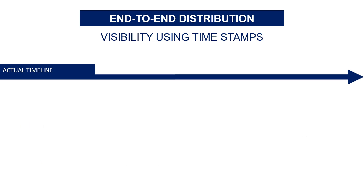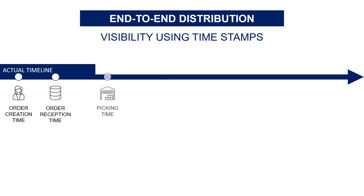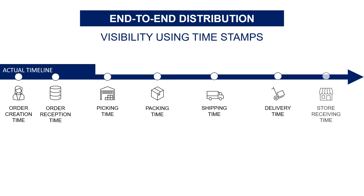To follow the shipment, we extract timestamps from the different systems involved in the chain. It starts from order creation and transmission. You have then the warehouse preparation part, starting from picking and ending at packing. And then you have the transportation part that adds the delivery time. Another timestamp can be captured when the goods are received by the store team in the system.